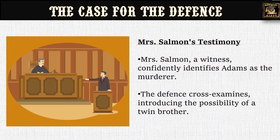At this point in the story, Mrs. Salmon is a witness who confidently identifies Adams as the one who committed the murder — she claims to have seen it happening. The defense cross-examines her and introduces the possibility of a twin brother, suggesting that even though Mrs. Salmon identified Adams as the murderer, it was actually Adams' twin brother who committed the murder and not him.